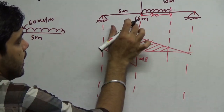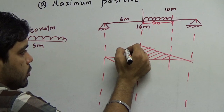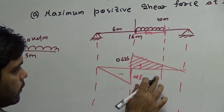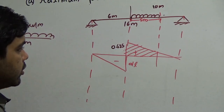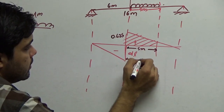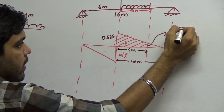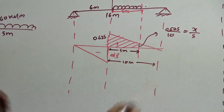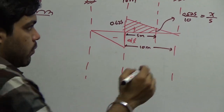We also need the ordinate at the other end of the UDL. By interpolation over the 10-meter positive span: 0.625 divided by 10, multiplied by 5, gives 0.3125.